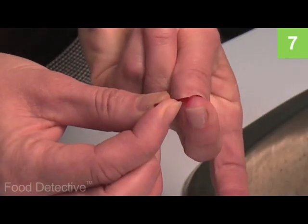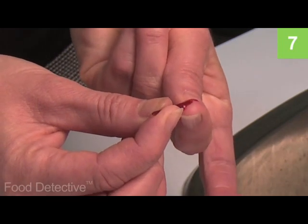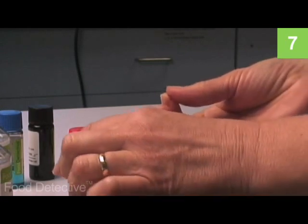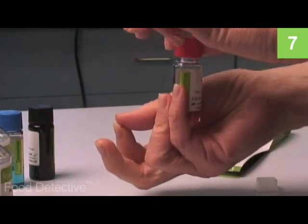If sufficient blood cannot be obtained then use the spare lancet provided and repeat from step one with a different finger. If you are having trouble taking the blood sample it may be a good idea to get a friend to help you.